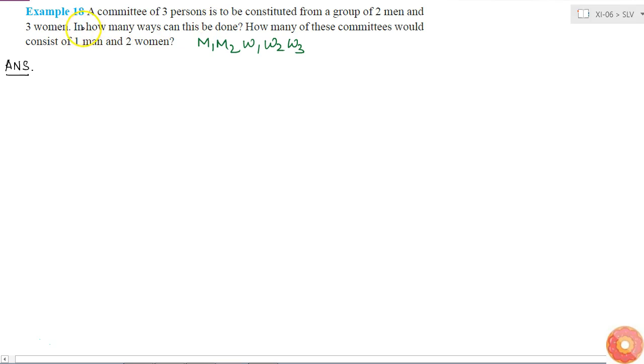Now the first part of the question is in how many ways this can be done. There is no restriction, so either a man or a woman can be chosen. So total ways equals simply 5C3, because we just have to select the people to make the committee. We don't have to arrange them.